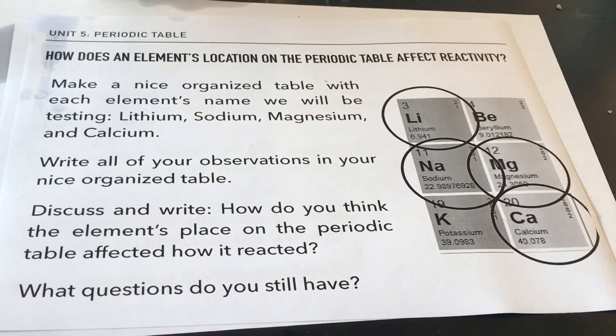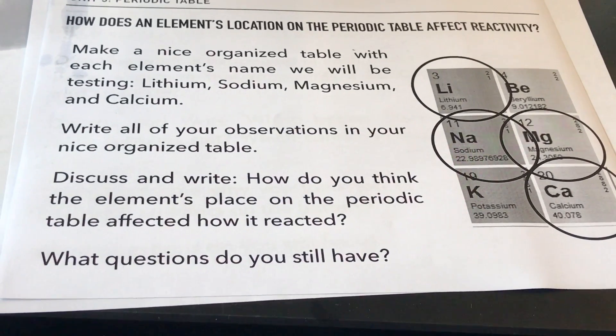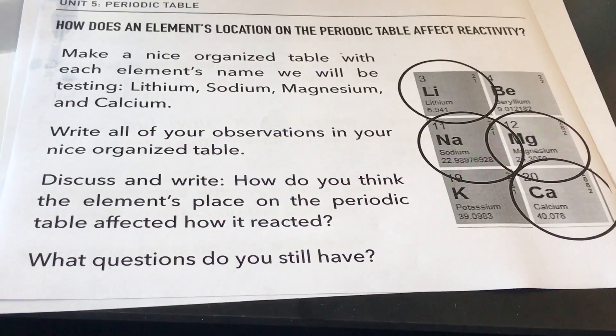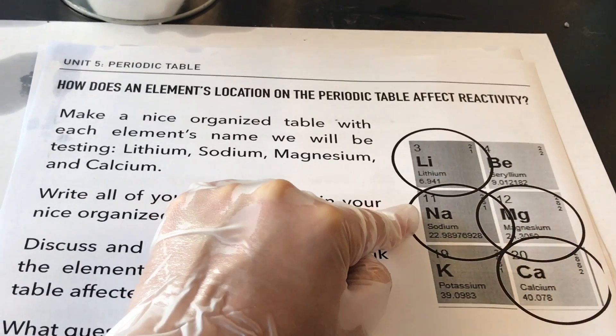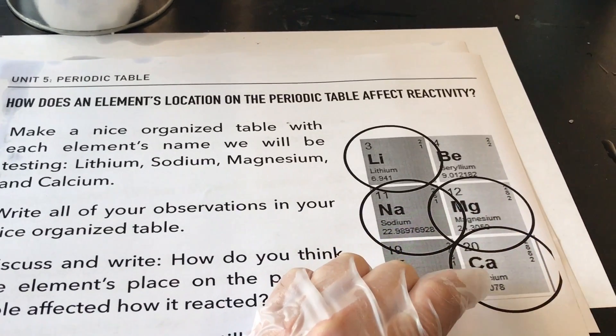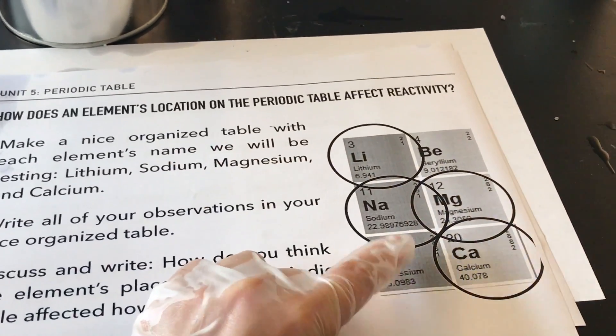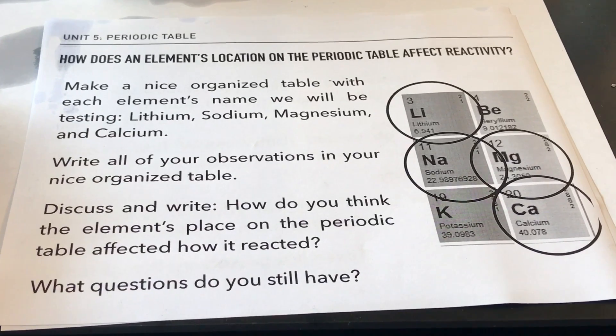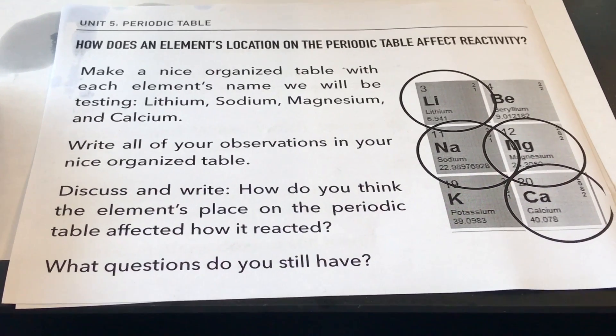All right so hopefully you have all of your observations in a nice organized table. And now I want you to discuss and write how do you think the elements place on the periodic table affected how it reacted. So go back and watch those reactions again. Compare lithium and its reaction to sodium and its reaction. And compare that reaction to magnesium and then also to calcium. Think about what it might mean to be in the same group or the same period or what kind of pattern you may or may not be seeing. After you've done that, answer what questions do you still have. And that's it.